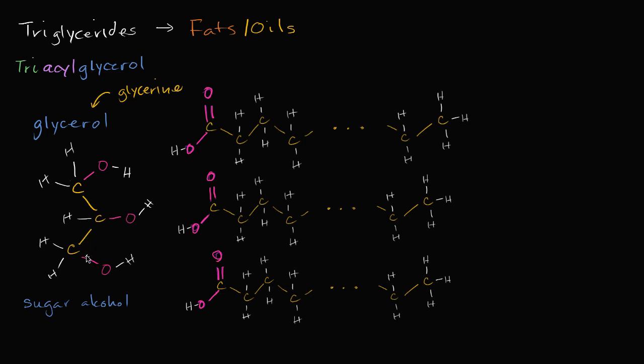You form a triglyceride when a glycerol molecule reacts with three fatty acid molecules. These characters on the right, these are each a fatty acid. This is one fatty acid, this is another fatty acid, this is another fatty acid.